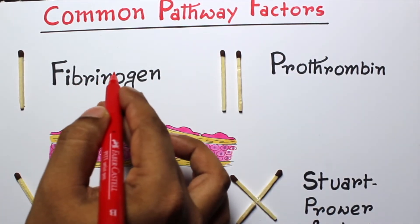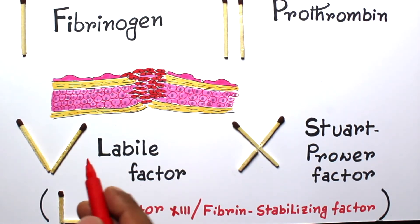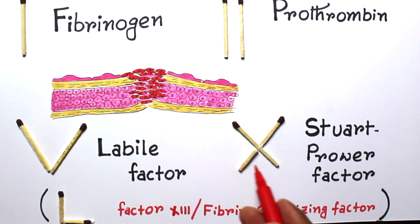So the common pathway factors are: factor 1 or fibrinogen, factor 2 or prothrombin, factor 5 or labile factor, and factor 10 or Stuart-Prower factor, and finally factor 13 or fibrin stabilizing factor.